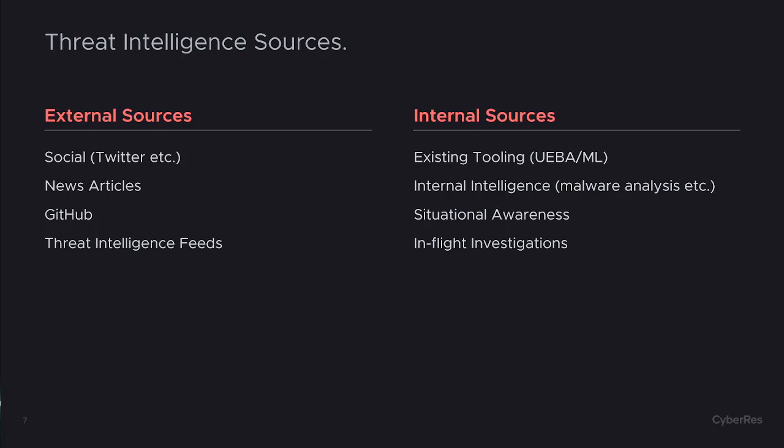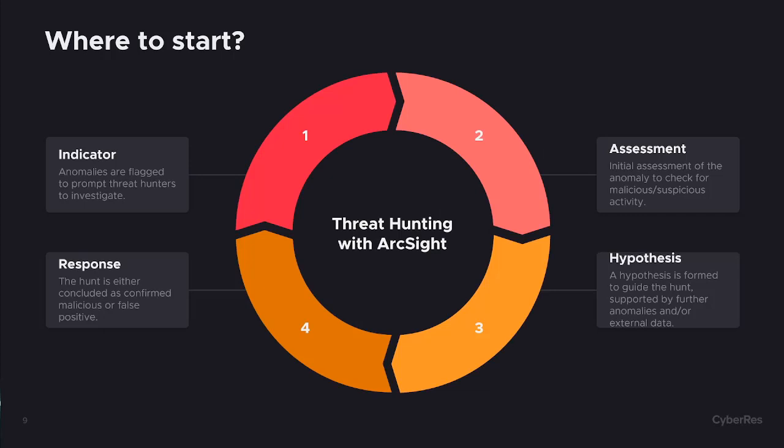In-flight investigations are incredibly important — if you have something already ongoing, you can take that information and reuse it within other threat hunts. So where do you start with a threat hunt? A threat hunt must be performed on the back of something, whether that is a hypothesis or an analytic alert generated to say that a user doesn't normally do this. It could be a potential account compromise, an insider threat, or a number of different things — but something needs to be confirmed before anyone really knows whether this is malicious or benign.